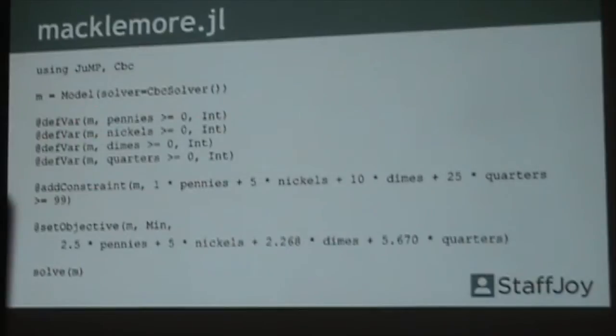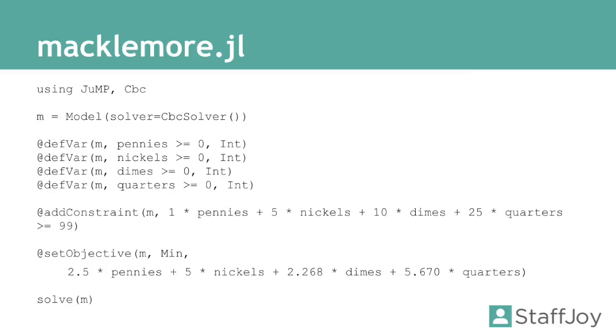We basically create these variables. We say we need pennies, we need nickels, we need dimes, and we need quarters. These need to be integers greater than or equal to zero. These variables are going to, in the end, tell us how many of each type of coin we need to carry.